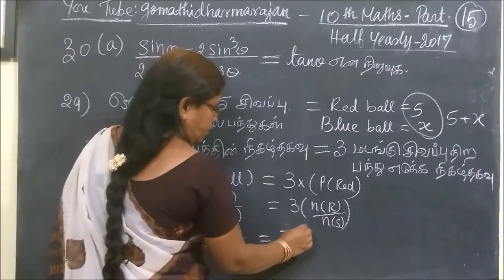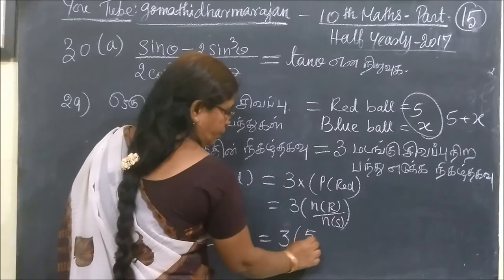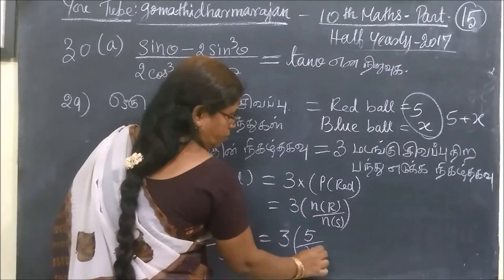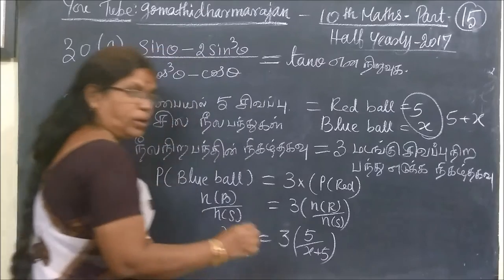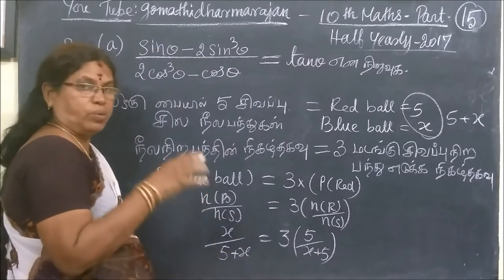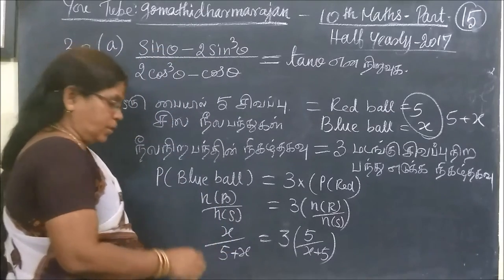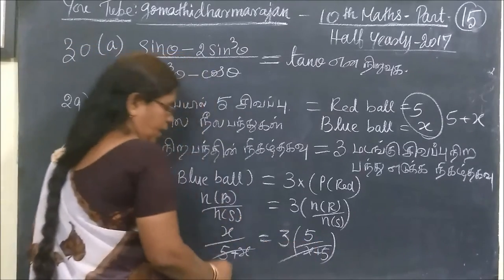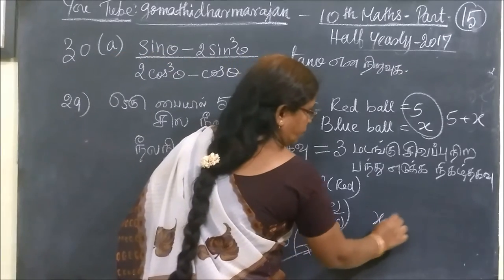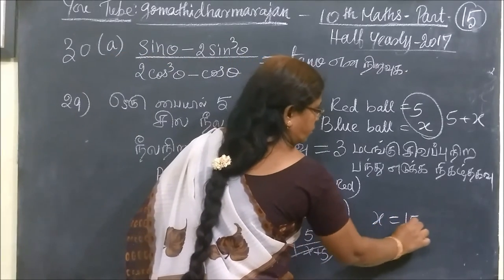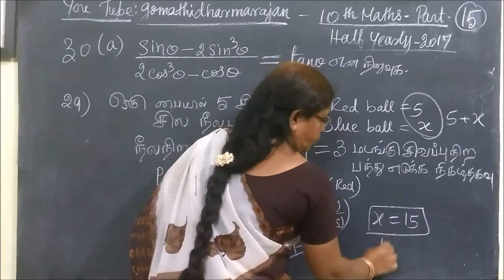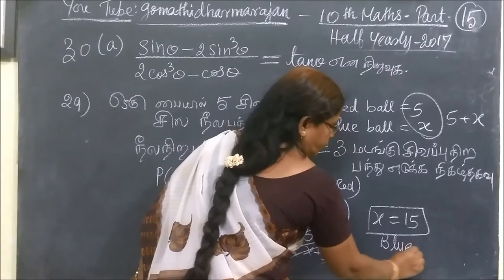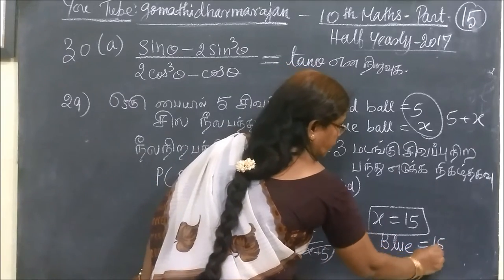Then 3 bracket red ball is 5x. Total number of balls S, total number of balls must be 5 plus S. So this gives x equal to 15. That means number of blue balls equal to 15.